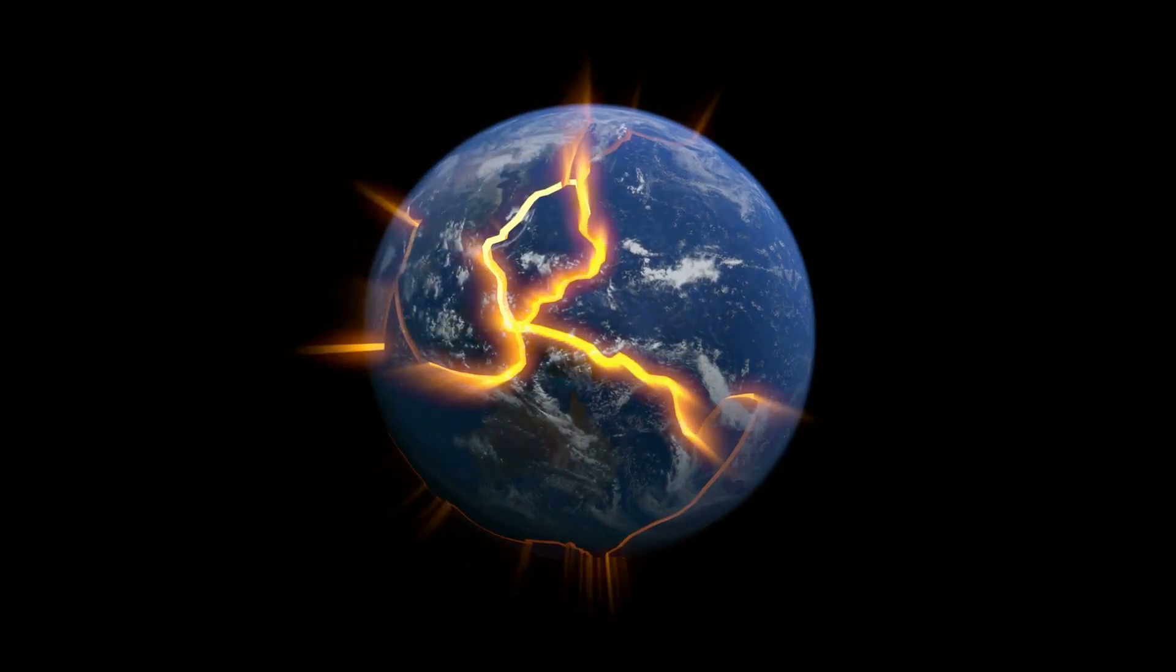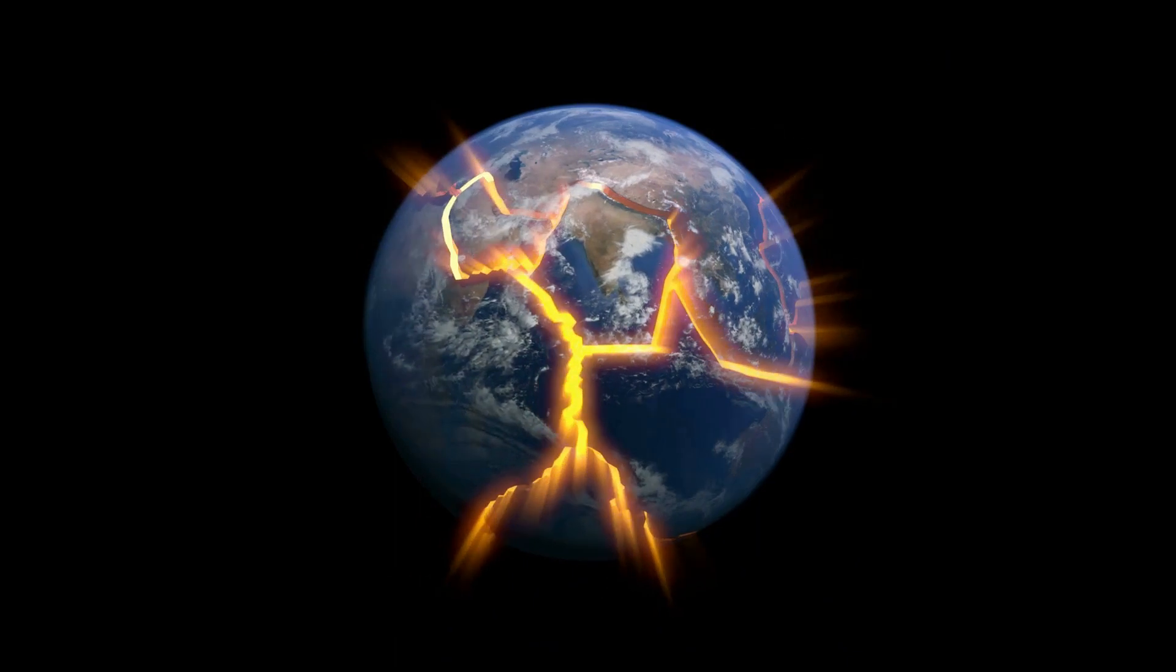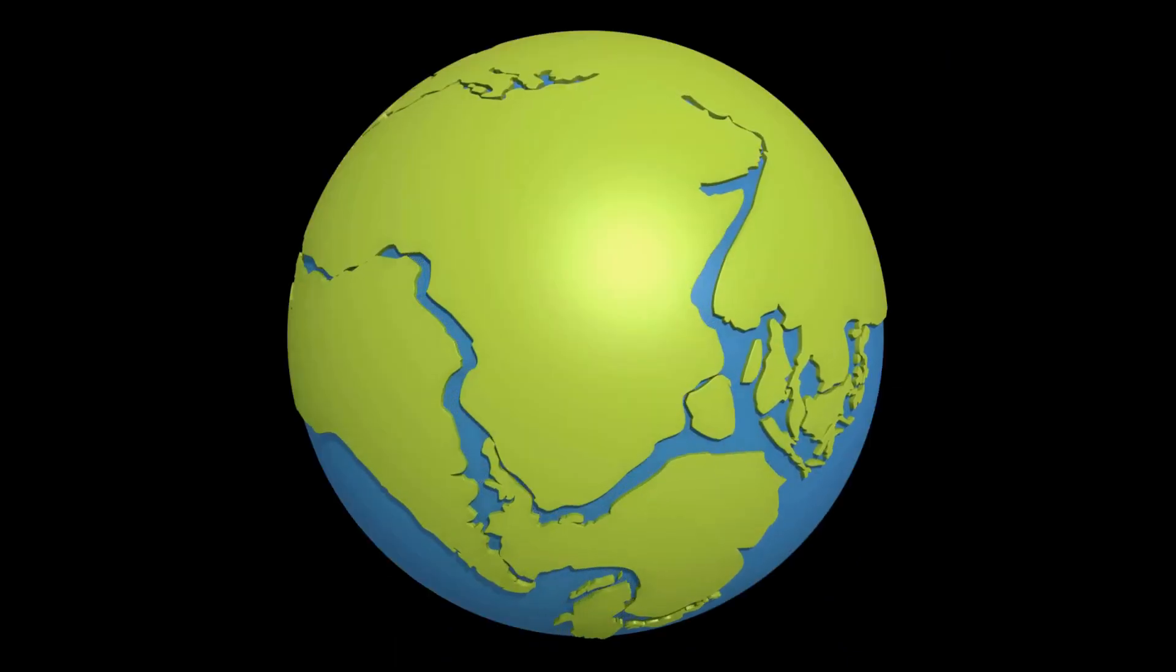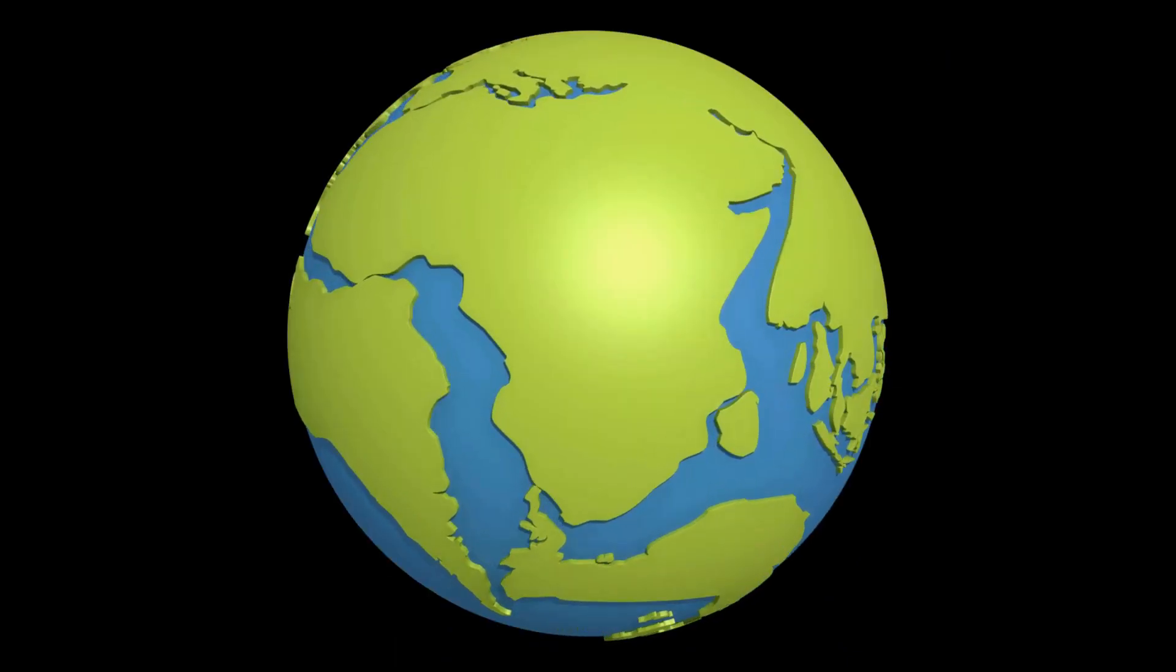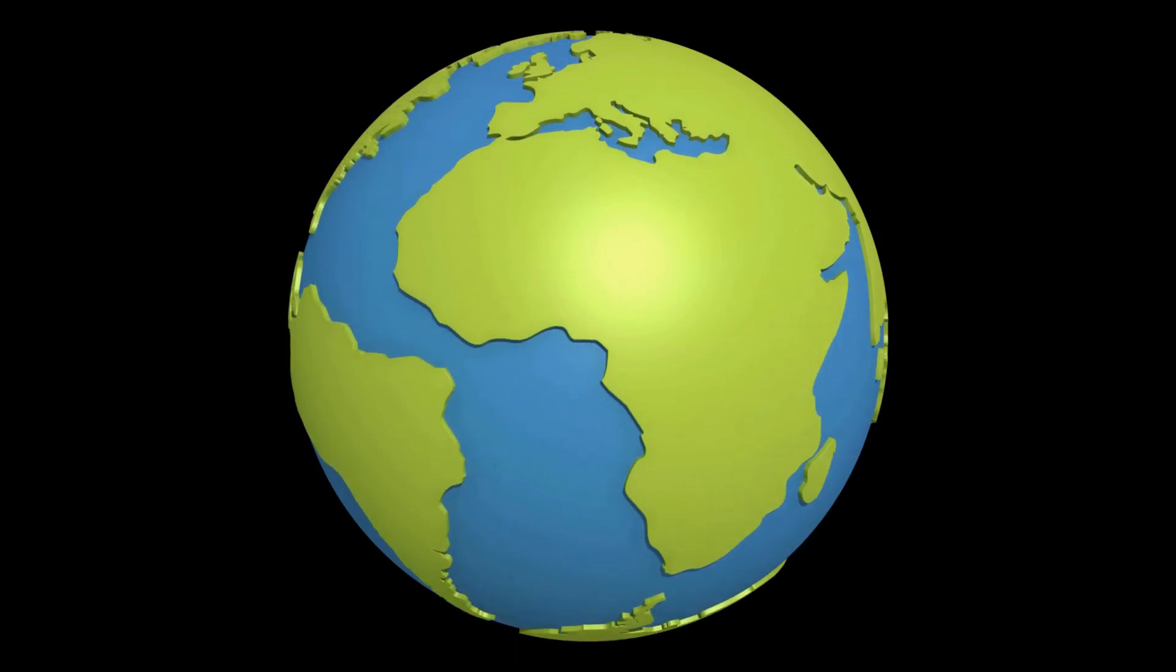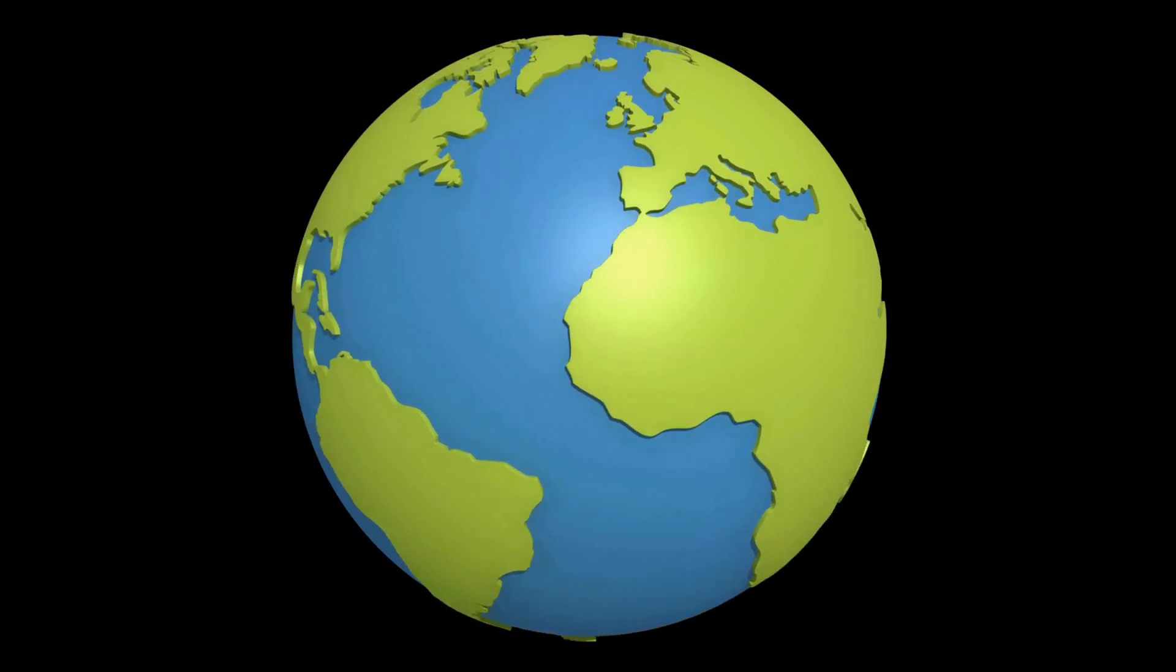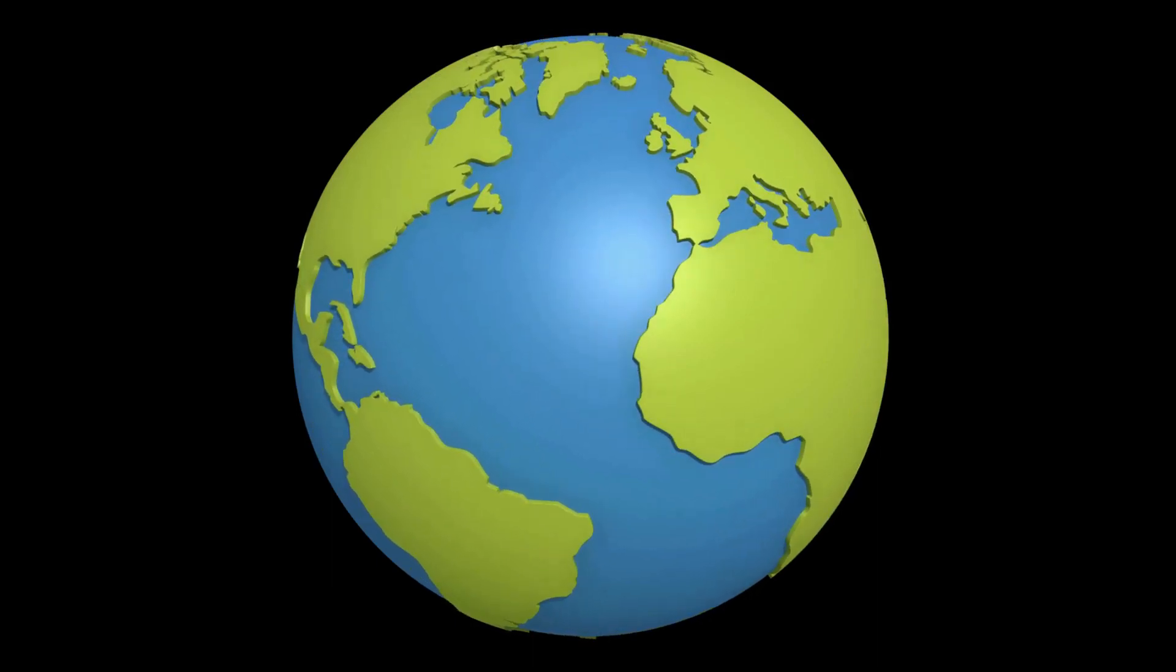In the early 20th century, a German meteorologist named Alfred Wegener proposed the theory of continental drift. Wegener suggested that the Earth was once a single supercontinent, which he named Pangaea. Over time, Pangaea broke apart, and the pieces drifted to their current locations, forming the continents we know today.